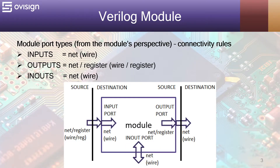Module port types and connectivity rules. When modules are connected together, they pass data from one to another by using their ports. Each output port becomes a source and each input port becomes a destination. Remember, inputs and in-outs should be nets or wire type. Outputs can be nets or registers, which is wire or register type.